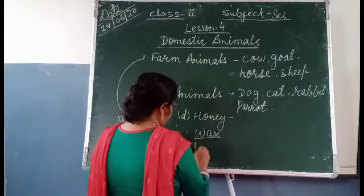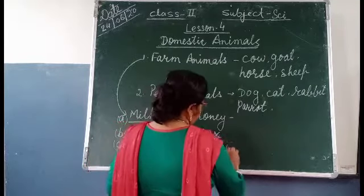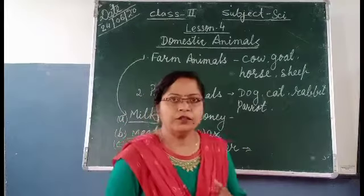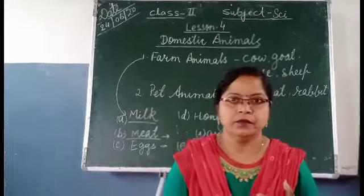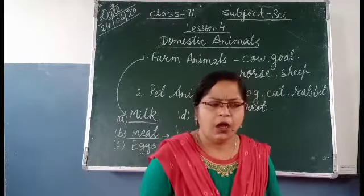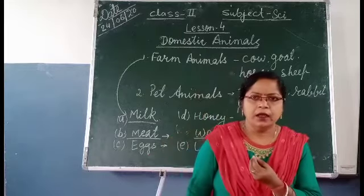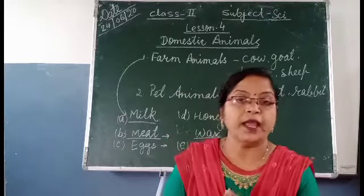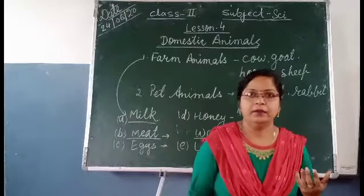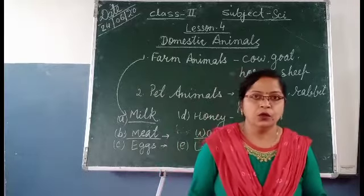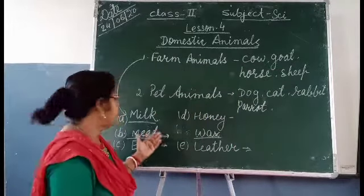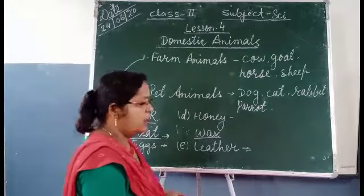Another material we get from animals is leather. The skin of snake, kangaroo, and buffalo is used to make leather. This leather is used to make belts, bags, purses, and shoes. So these are the products that animals give us: milk, meat, eggs, honey, and leather.